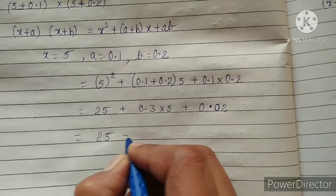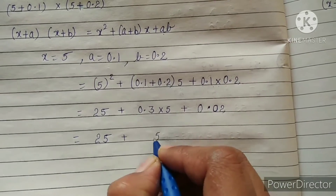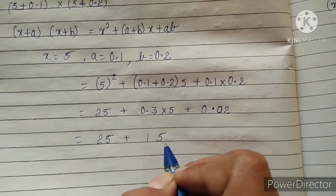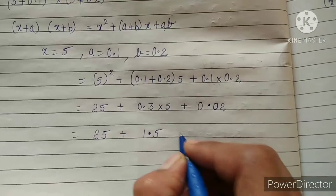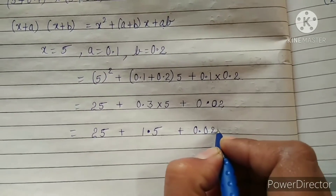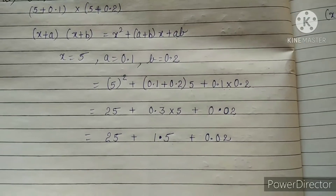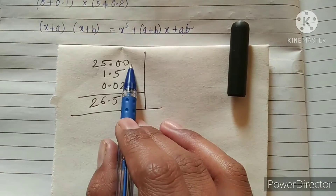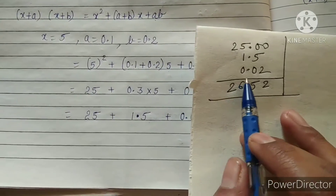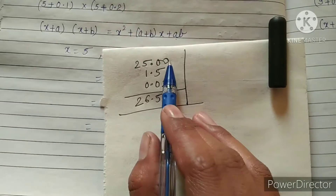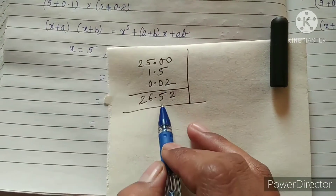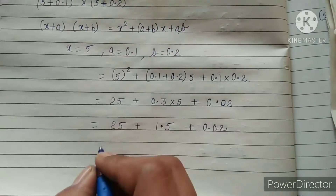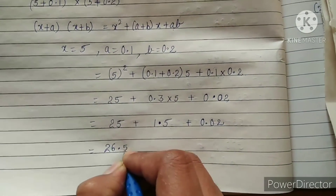We have 25 plus 0.3 times 5, which is 1.5. After the decimal 1 value, so we leave 1 value, giving 1.5, and 0.02. Adding: 25 has no decimal values so written as 25.00; adding 25.00, 1.5 and 0.02: 2 plus 0 is 2, 5 plus 0 is 5, decimal in the same line, 5 plus 1 is 6, 2 as it is. The answer is 26.52.